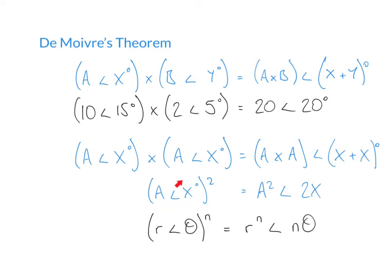Here we had a number in polar form raised to the power 2, or squared. On the right-hand side, our modulus a is raised to the power 2, and our angle is multiplied by 2, because angle theta is multiplied by whatever n is. So De Moivre's theorem states: r at an angle of theta, all raised to the power n, is equal to r to the power n at an angle of n times theta.